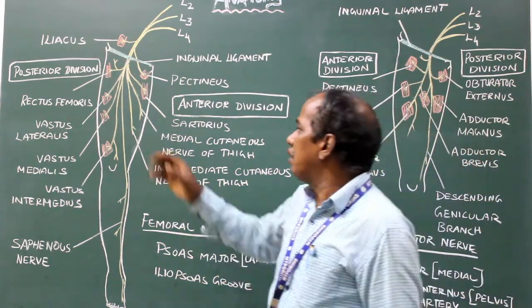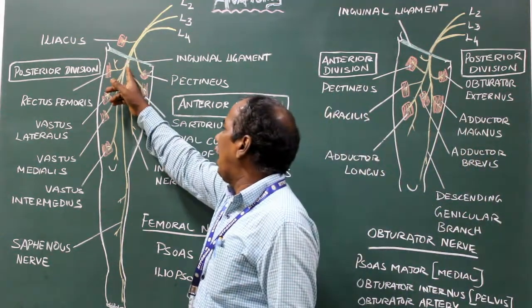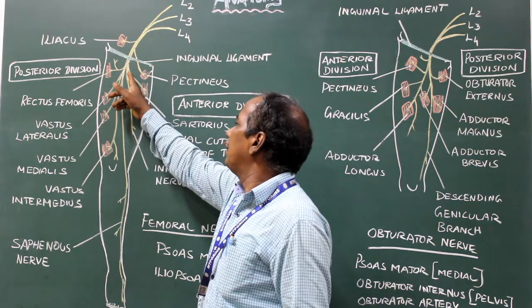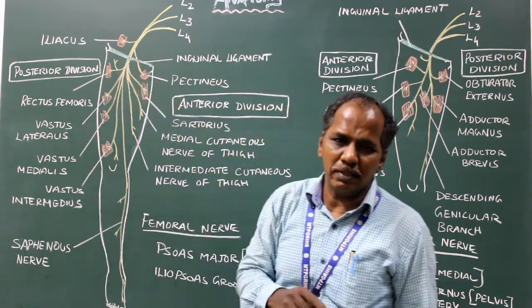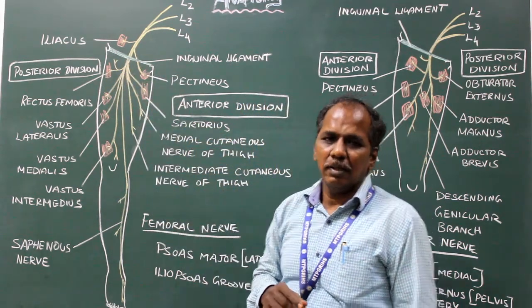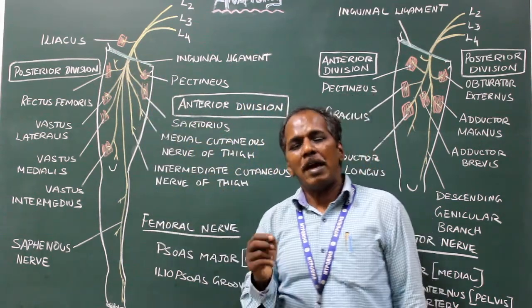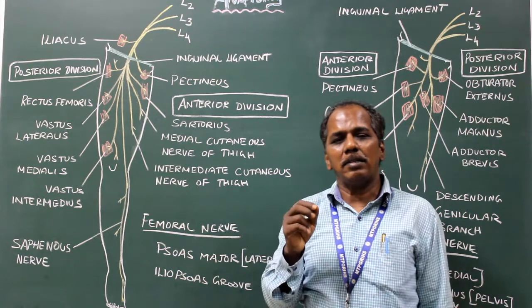In the iliopsoas groove it divides into anterior and posterior divisions. We now consider its branches and distribution.